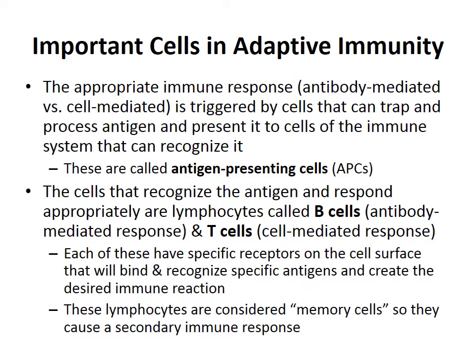Key cells in adaptive immunity: antigen-presenting cells (APCs) trap and process antigens, then present them to immune cells that can recognize them. The cells that recognize antigens and respond are lymphocytes — B cells, involved in the humoral response, and T cells, involved in the cell-mediated response. B cells produce antibodies; T cells are involved in cell-mediated immunity.